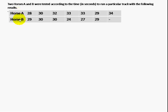Horse A horse B data he has given. Horse A, the first round it completed in 28 seconds, the second round in 30, third round 32, fourth round 33 seconds, fifth round 33 seconds, sixth round 29 seconds and seventh round 34 seconds.